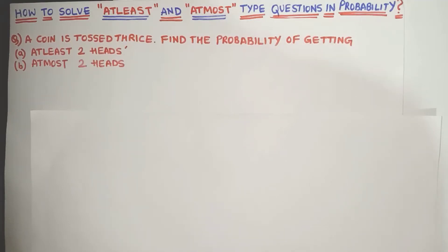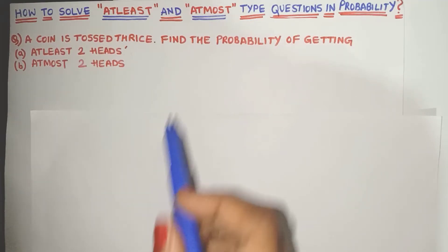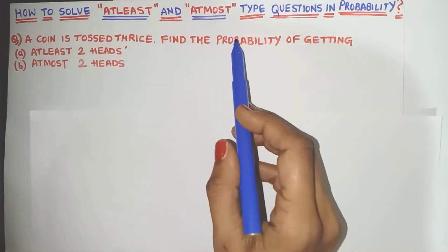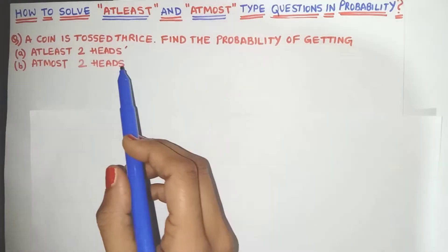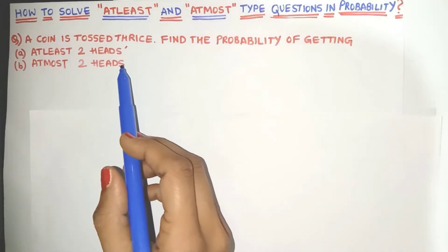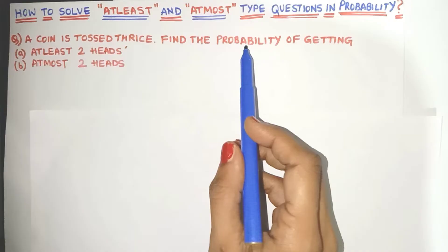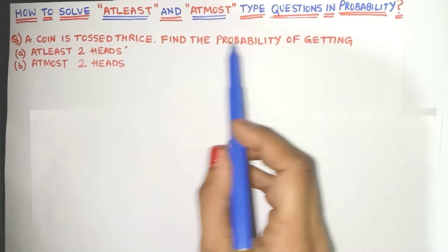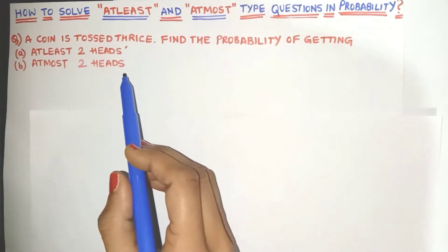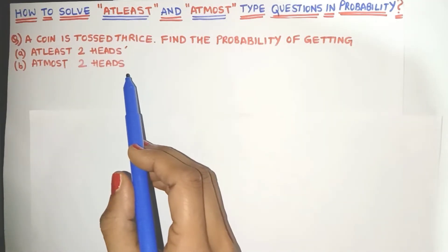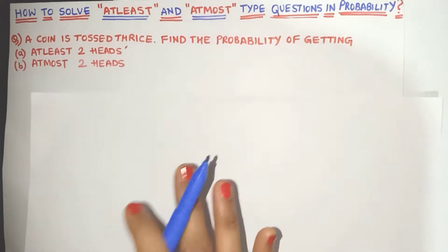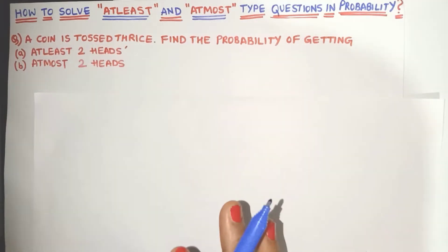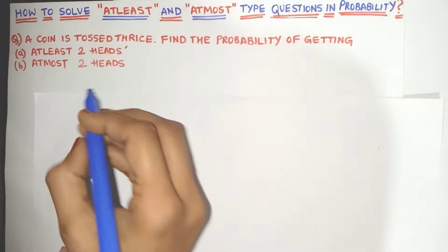Hello everyone! Today let's learn how to solve 'at least' and 'at most' type questions in probability. Here is the question: a coin is tossed thrice. We have to find the probability of getting at least two heads and at most two heads. First, let's find out all the possible outcomes — that is, let's find out the sample space.